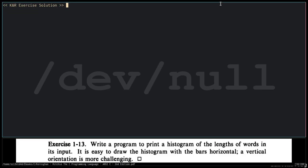Exercise 1-13. Write a program to print a histogram of the lengths of words in its input. It is easy to draw the histogram with bars horizontal. A vertical orientation is more challenging.